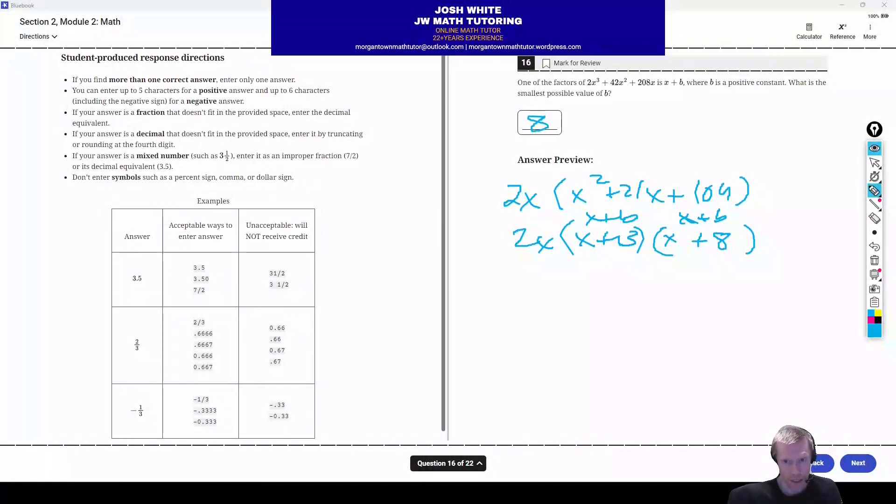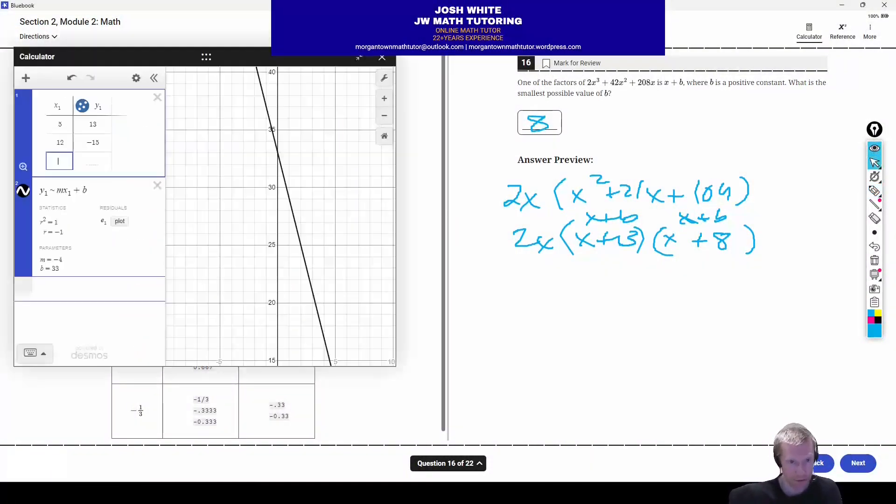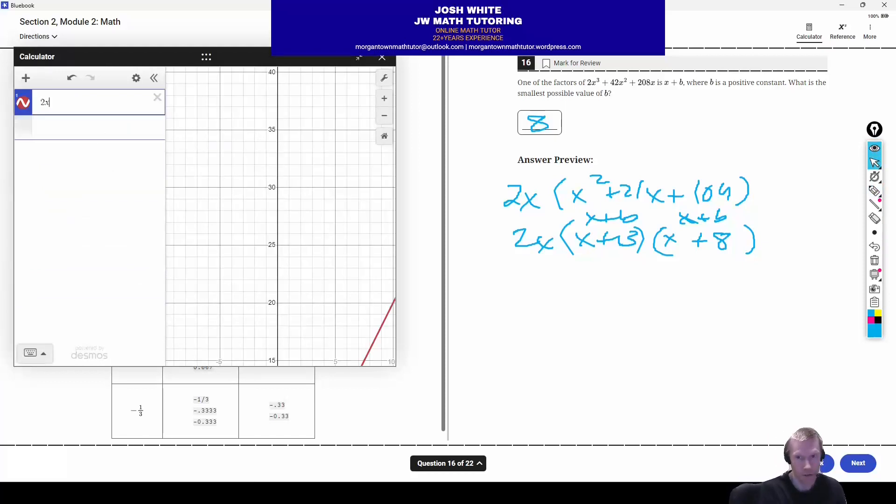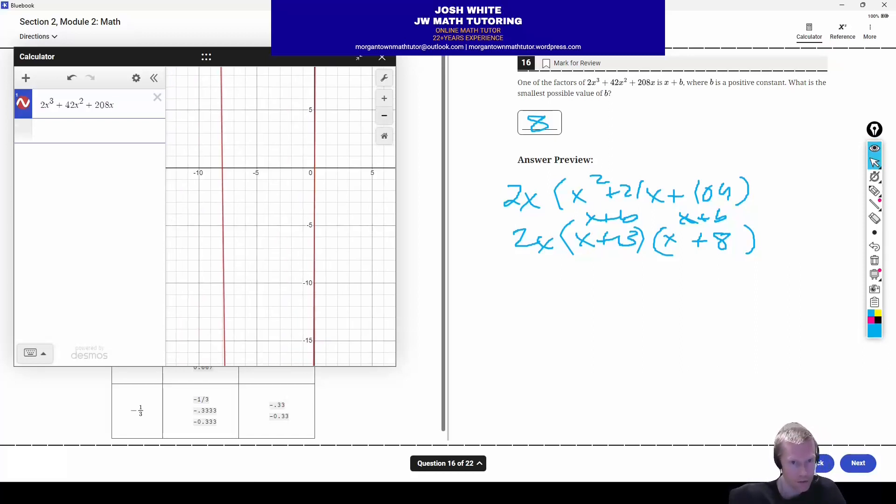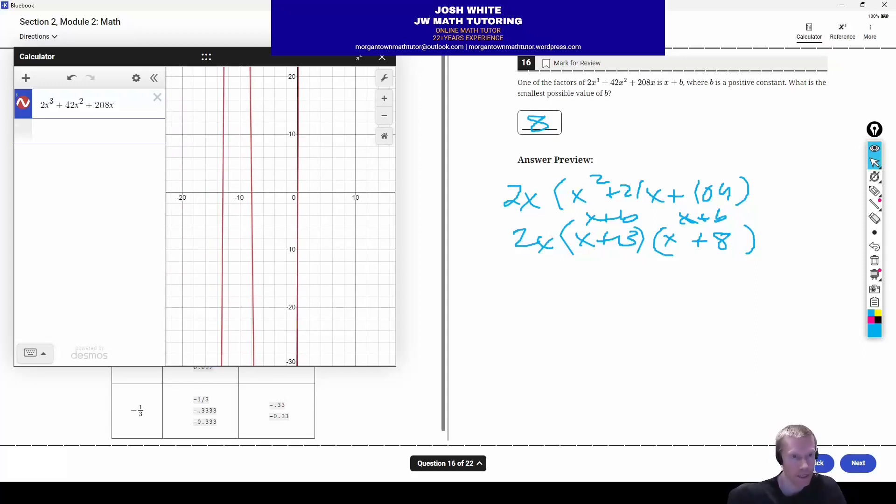Now, an alternate way you could do this is, you could go to Desmos, and you could just graph out the whole thing. Okay, so here, let's scroll down. So let's see. So here's the thing, though, that you have to remember or be careful with if you're doing this in Desmos. So first of all, these are the actual roots or solutions here. We've got negative 13, negative 8, and 0. Okay, 0 is not going to be a possibility because it tells us here that b is a positive constant. 0 is not positive, so we can eliminate that.